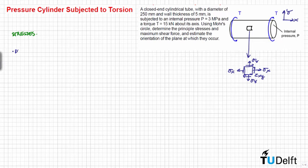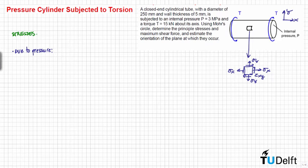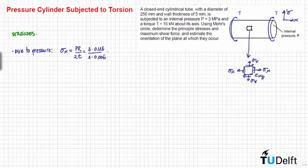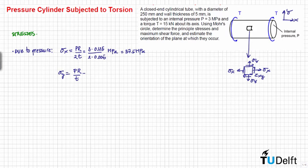First, the stress due to pressure. From our previous exercise, for a cylinder with internal pressure p, the stress in the longitudinal direction sigma_x is equal to p·r divided by 2t, where t is the wall thickness. This corresponds to the x-direction. The stress in the y-direction (hoop stress) sigma_y is equal to p·r divided by t.